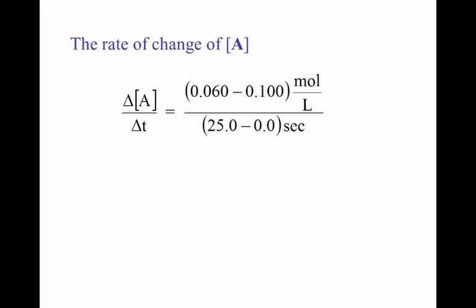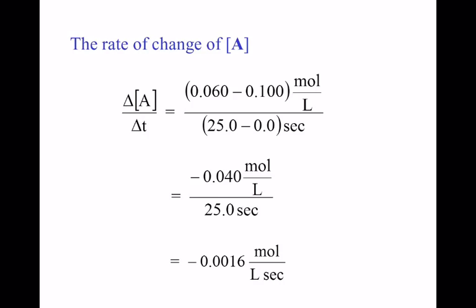Given that information over the 25-second time interval, we compute the rate of change of A: final minus initial gives 0.060 minus 0.100 equals negative 0.040 moles per liter. Delta T is 25 seconds. Taking negative 0.040 moles per liter divided by 25.0 seconds gives the rate of change of A: negative 0.0016 moles per liter per second.